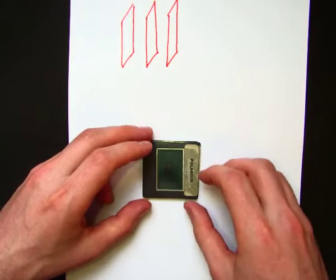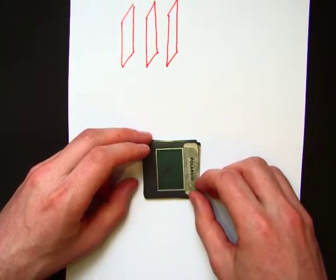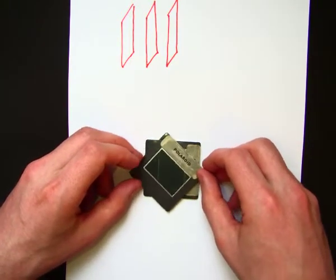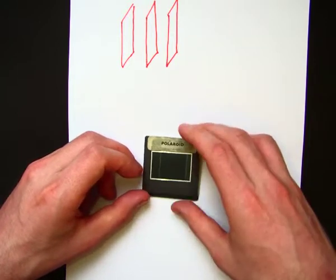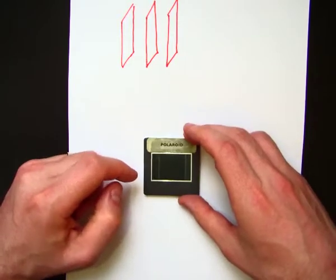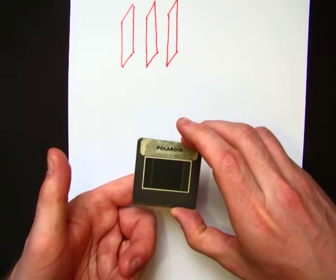The reason I know it's transverse, though, is because if I take this now, and I start rotating it in this direction, now these are 90 degrees to each other. And in fact, it's completely black behind here. You can't see anything.